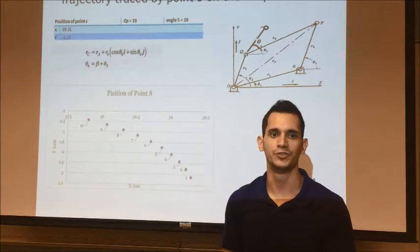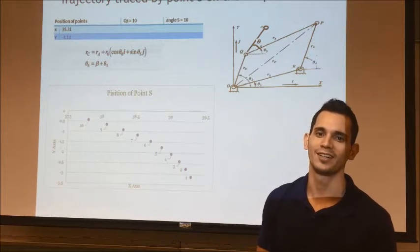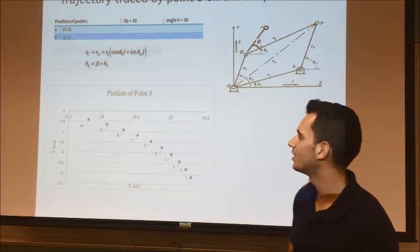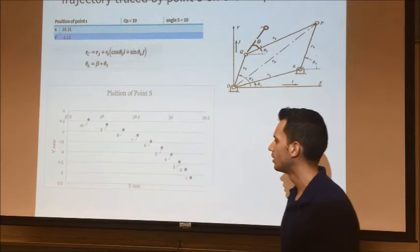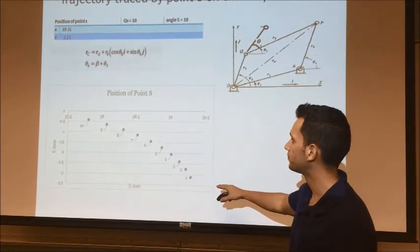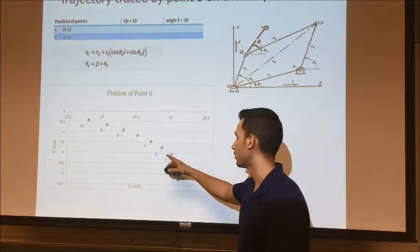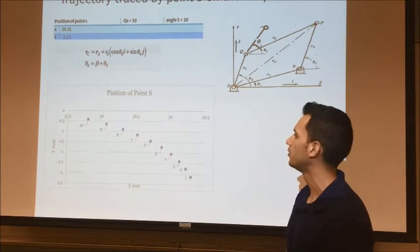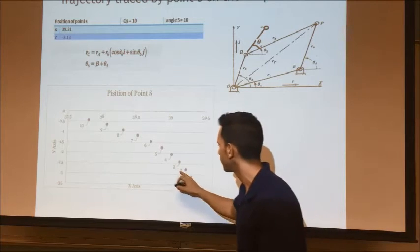For the trajectory traced by point S on the coupler curve, as you can see, this is the result. This graph shows the trajectory of the couplers Q and S. This over here is the angle.